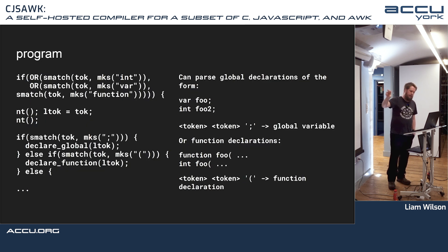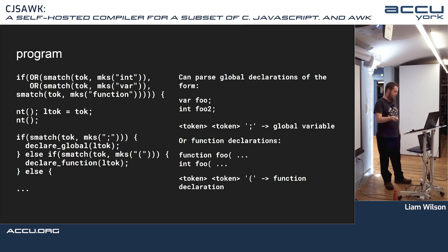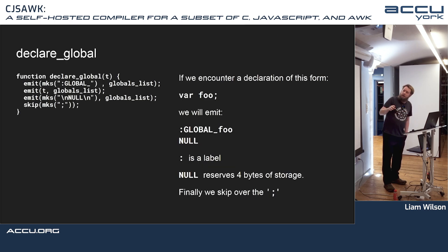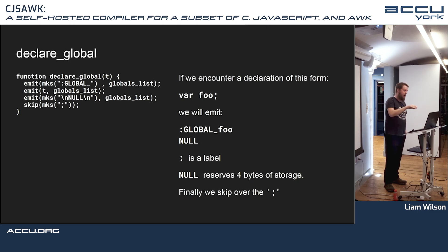Zooming into the main loop of the compiler itself: we can parse global declarations of the form 'var foo;' or 'int foo;', and function declarations of the form 'function foo(' or 'int foo('. Essentially, if you've got TOKEN TOKEN semicolon, you've got a global variable; if you've got TOKEN TOKEN open-paren, you've got a function declaration. For declare-global, if we encounter 'var foo', we emit assembly language ':global foo null' — where colon is a label and null reserves four bytes of storage — then skip over the semicolon.